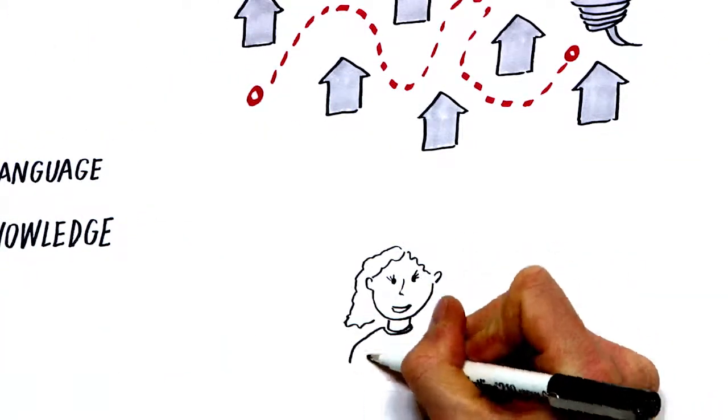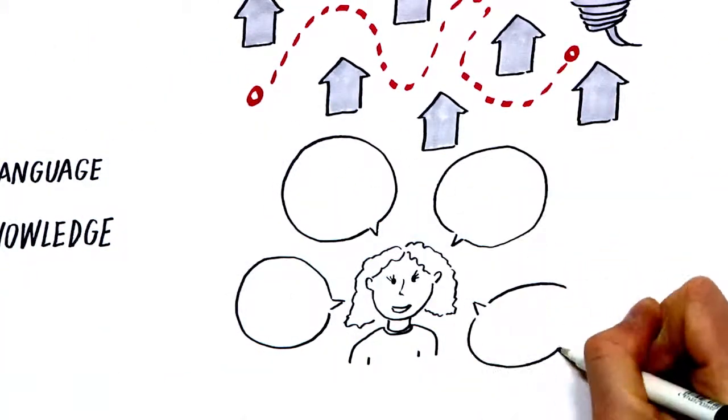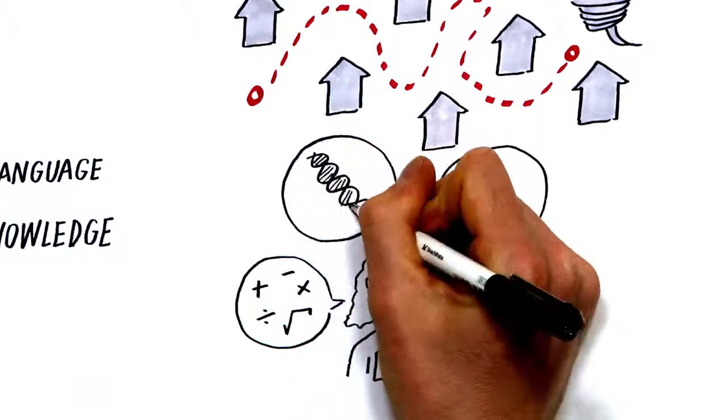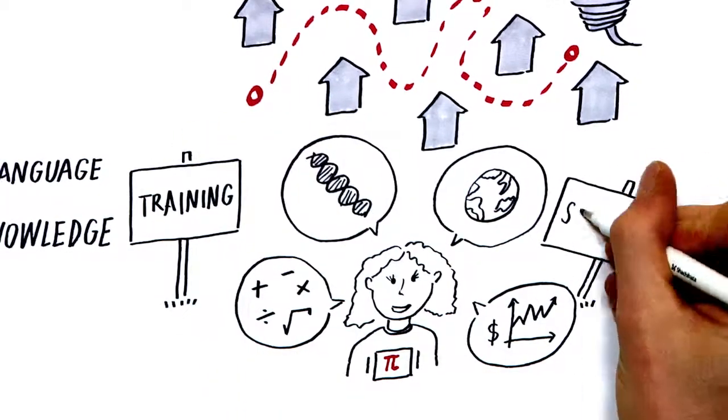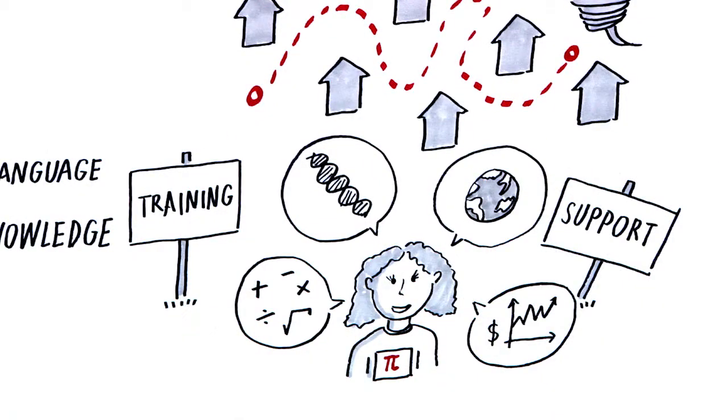What we really need is to recruit and train a new generation of mathematical minds who are focused on tackling society's greatest challenges. They need training and support so they can collaborate with interdisciplinary partners.